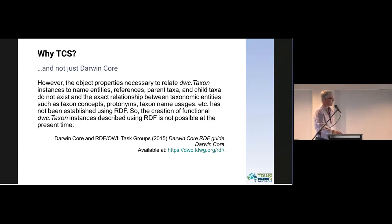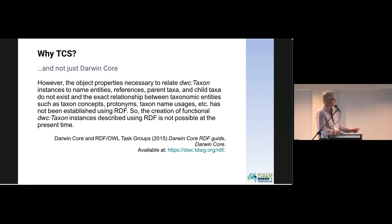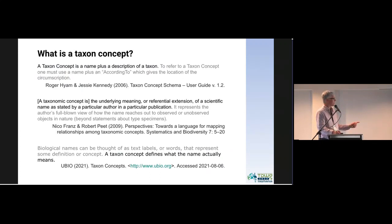In RDF, they couldn't do anything with the Darwin Core taxon class because it has references to all these classes that don't exist in Darwin Core. Also, it's not clear what the relationships are between taxon concepts, taxon name usages, and taxonomic name uses — and it's not actually clear what the Darwin Core taxon is.